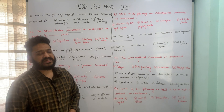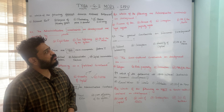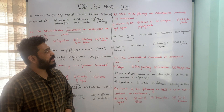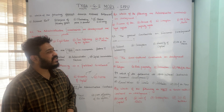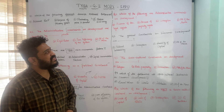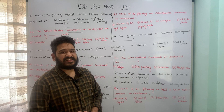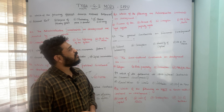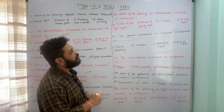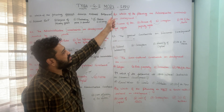The next question asks: which of the following are administrative constraints on development? The options are: A) absence of developed legal rights, B) absence of property rights, C) corruption, and D) all of the above. Here, corruption is the administrative constraint; the other two are not administrative constraints. Therefore, option C — corruption — is the correct answer.